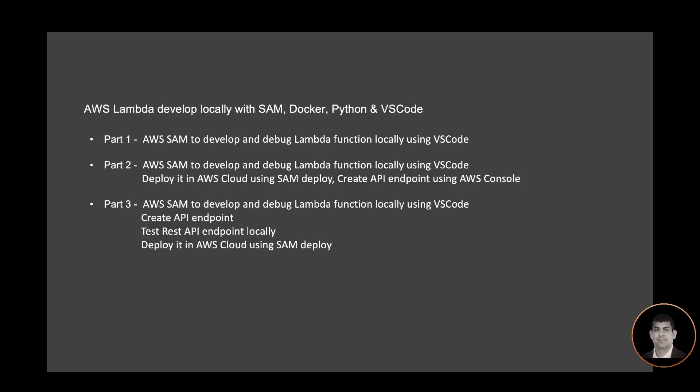I have this workshop in three parts. In part one I will demonstrate how to develop and debug a Lambda function locally using VS Code and AWS SAM. In part two I will use AWS SAM to deploy the function to AWS Cloud and create an API endpoint using AWS Console. In part three, the entire tech stack will be created using AWS SAM — creating a function, an API endpoint, testing the API endpoint locally, and then deploying it to AWS Cloud using SAM deploy.